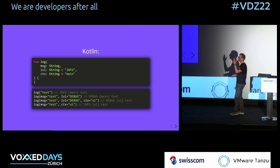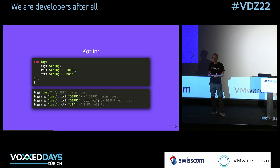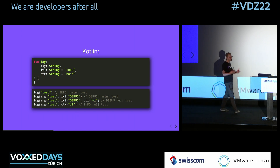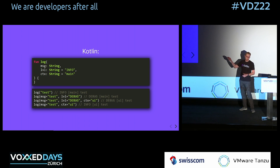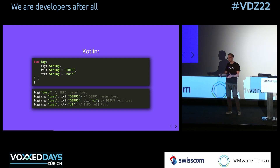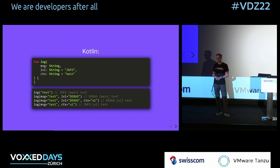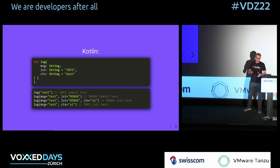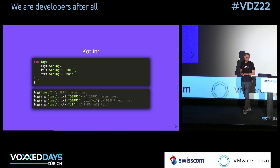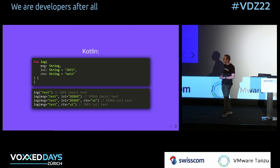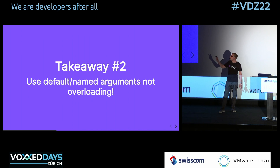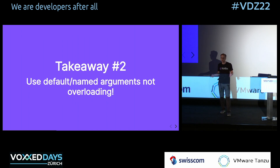In Kotlin, we can. You only define the function once, but add default arguments to those parameters. So level and context actually have a default value; if you don't pass a value, it uses that default. On the caller side, we can use named arguments, where we specify not just position but also the name of the parameter. So we can say that a UI string we're passing is actually the context parameter. Takeaway number two: use default and named arguments, not overloading.